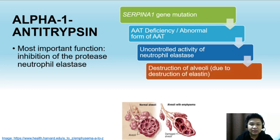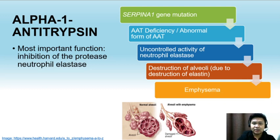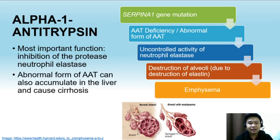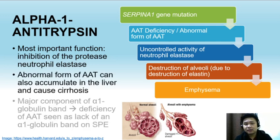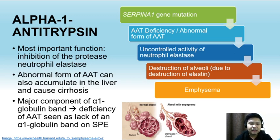What happens is, due to the uncontrolled activity of neutrophil elastase, alveoli could be destroyed due to the destruction of elastin found in the alveoli, eventually leading to emphysema. Abnormal forms of AAT can also accumulate in the liver and cause cirrhosis. Alpha-1 antitrypsin is the major component of the alpha-1 globulin band in serum protein electrophoresis, so in its deficiency you will see a lack of an alpha-1 globulin band on SPE.